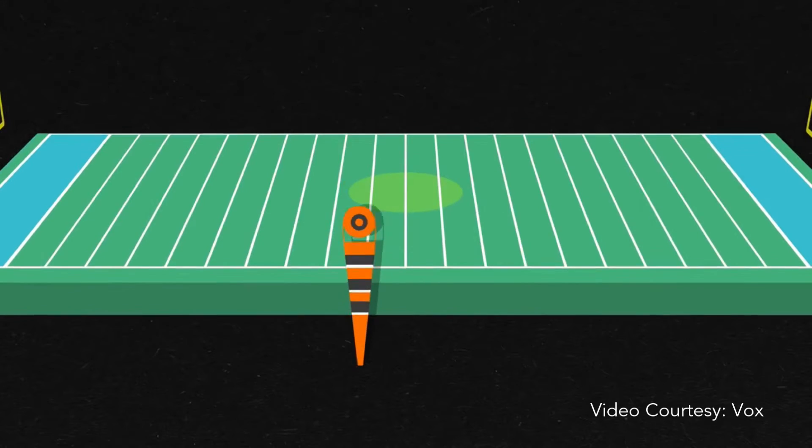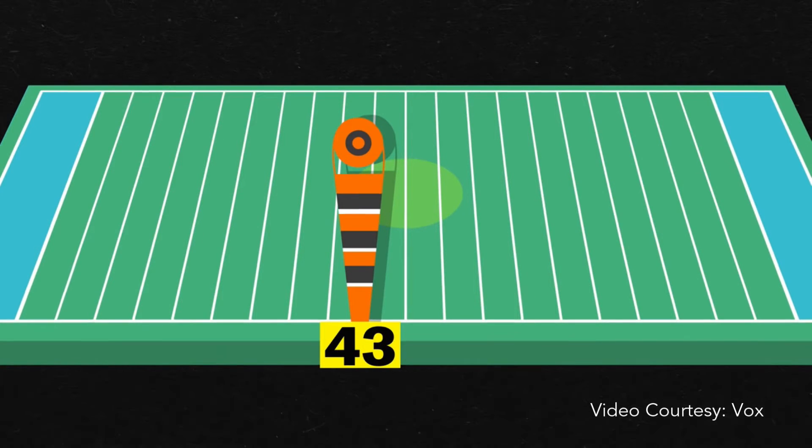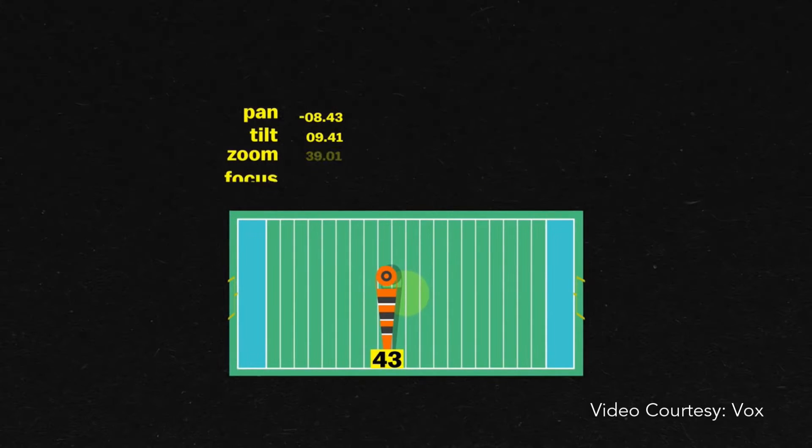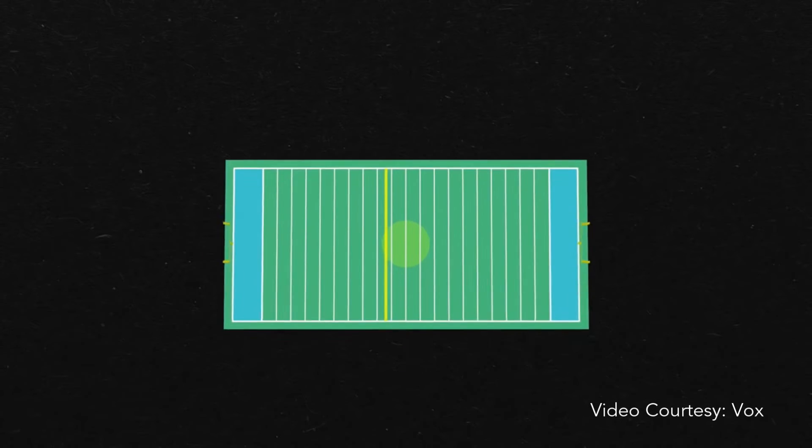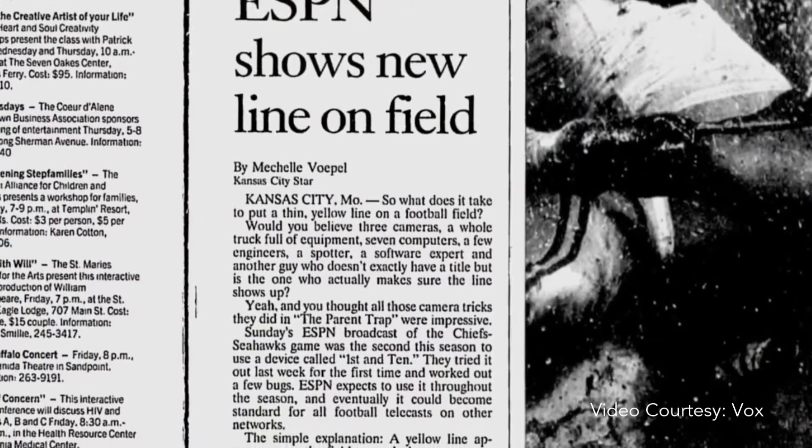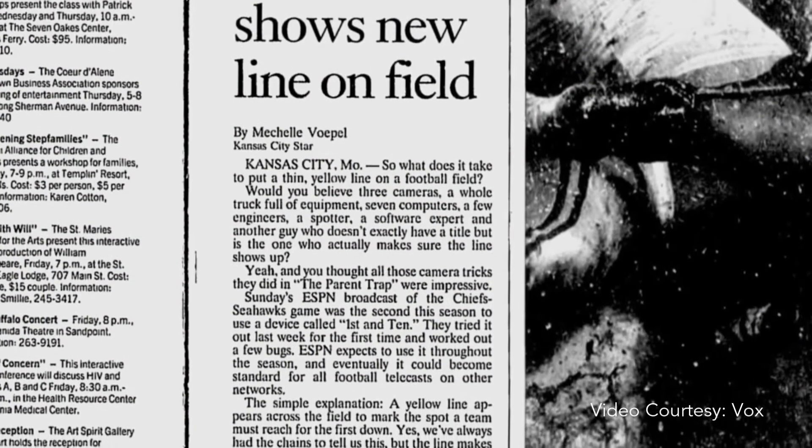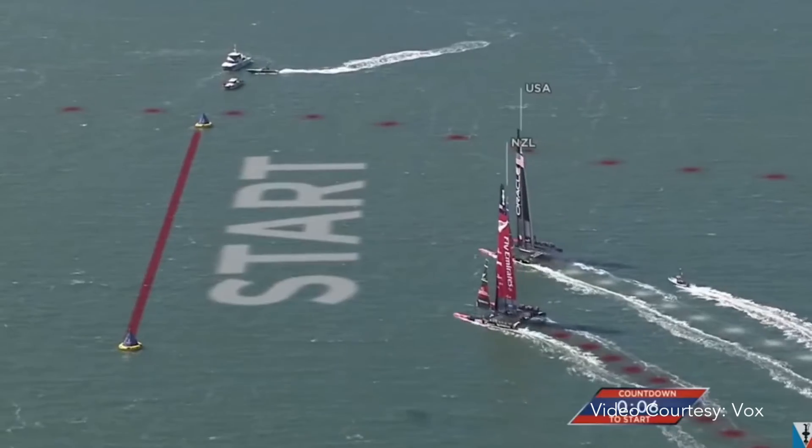So when the operator specifies that the first down is at the 43-yard line, for example, the computers combine the camera data with their own model of the field to draw the yellow line in the proper perspective and to redraw it for every frame being broadcast to viewers. Sport Vision won an Emmy for it and went on to make virtual visual aids for NASCAR, baseball, sailing, and the Olympics.